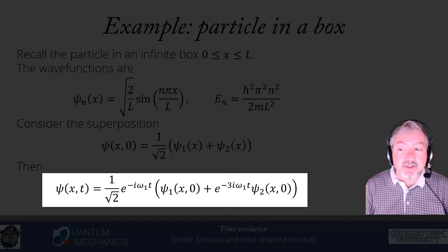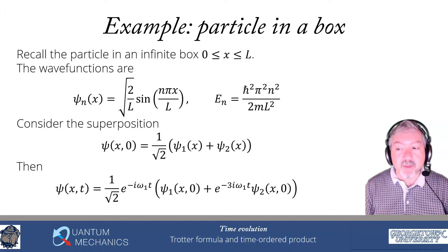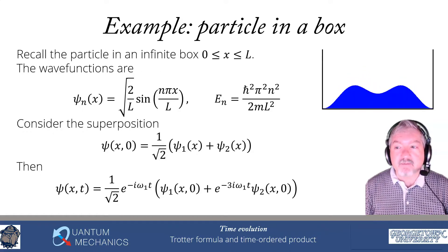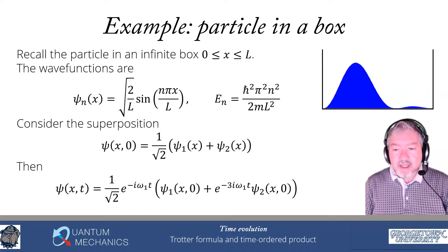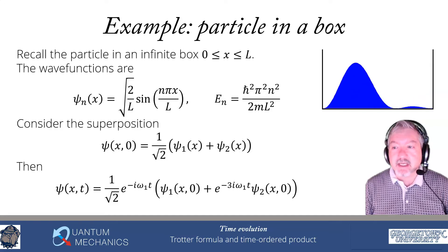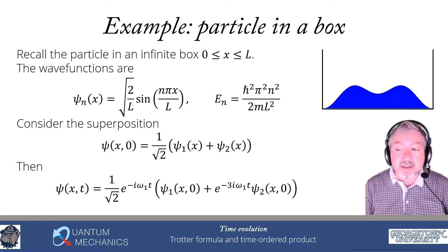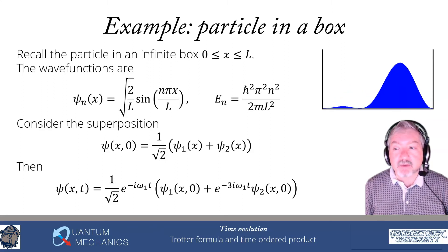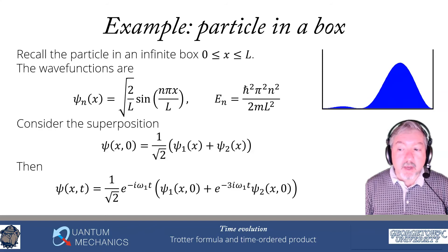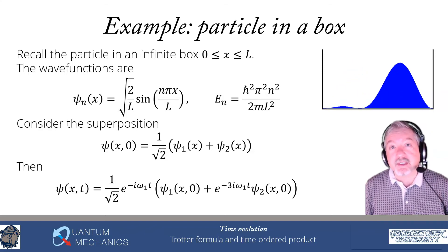Looking at the animation from the Wikipedia page on time evolution, you can see a sloshing motion — like a particle bouncing back and forth between the walls. This is a plot of |ψ|² as a function of time. It's sloshing back and forth inside the box, with the probability distribution changing. It doesn't get very close to the walls as in classical motion, but you have this quantum motion derived from the time evolution operator acting on a superposition.